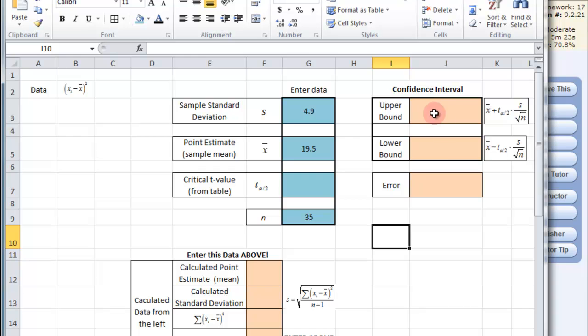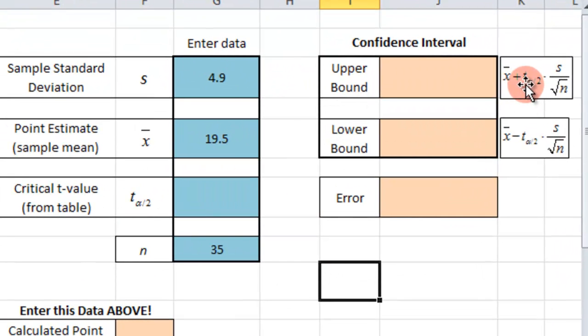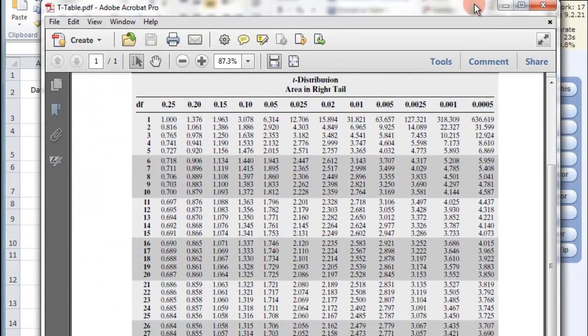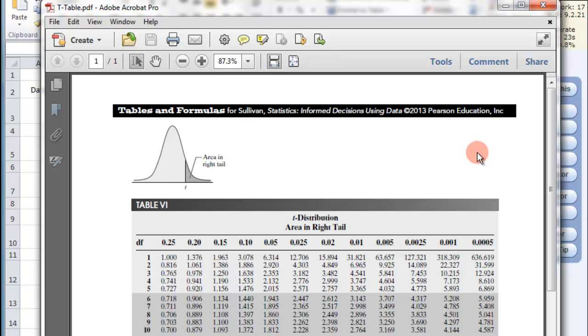Now in order to calculate the upper and lower bounds we need this equation here. This is found in the book and we just need to calculate it here. So we have the sample mean plus the critical t value times the sample standard deviation divided by the square root of the n. And we only need to get this critical t value by using the back of the book. There is a chart in the back of the book. Here is the chart. Looks like this. Called table 6.